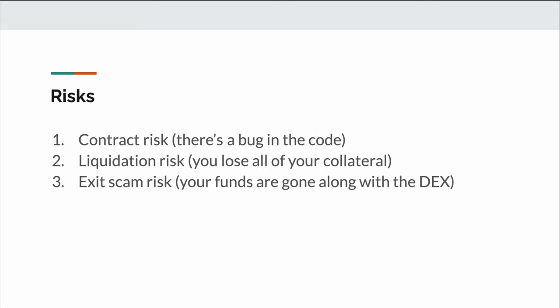The first risk is contract risk, meaning that there could be a bug in the code and that something unusual happens with your funds, and therefore you can lose all of your coins. The second risk is with getting liquidated. What this basically means is that your assets are sold off because your debt has reached a certain ratio with respect to your assets or your collateral. When this happens, you'll pretty much lose all of your coins that you've put up as collateral and it'll also trigger a taxable event.